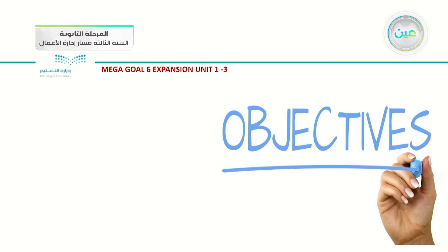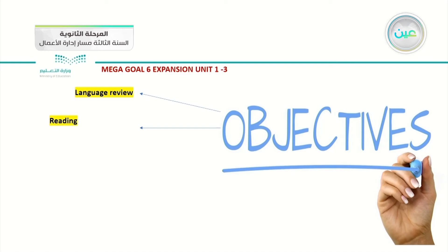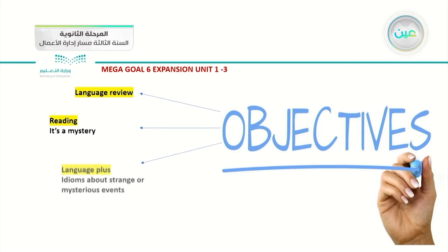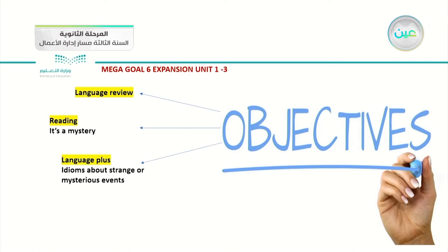Are we ready for our objectives today? Let's begin. Our objectives today have some points. Number one, language review. Point two is reading — we will discuss the meaning of the reading passage, answer some questions, and discuss synonyms and idioms. The title of our lesson is 'It's a Mystery.' And number three, language plus — idioms about strange or mysterious events.